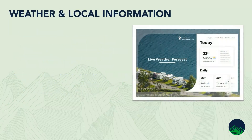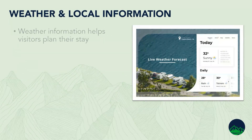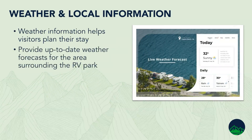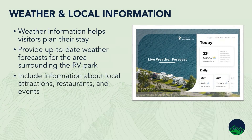Weather and local information — weather is a big deal for people that would be traveling. If you can add that, it helps them plan. You can provide up-to-date weather forecasts for the area and the surrounding park. You can also include local attractions, restaurants, and events — that's really good for people, especially if you're a destination place rather than a stopover. People are going to want to know what they can do while they're in your area.